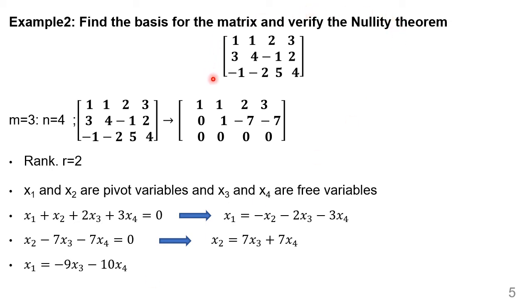We take the second problem. It is a 3×4 matrix, that is 3 rows and 4 columns. We will try to verify the nullity theorem. We apply the row reduction technique to get the final echelon form, which we get as: row 1 [1, 1, 2, 3], row 2 [0, 1, −7, −7], row 3 [0, 0, 0, 0]. Here, one row is eliminated.